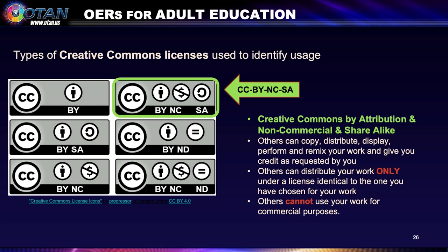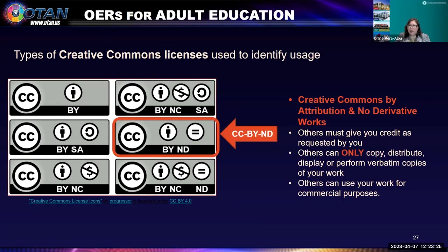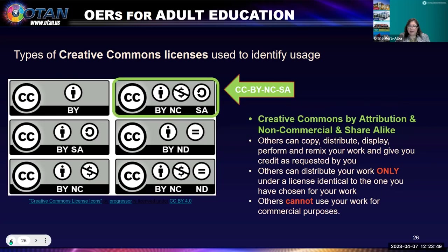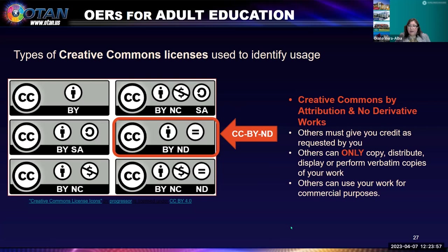The next license is CC BY ND — Creative Commons by attribution and no derivative works. Others must give you credit and can only copy, distribute, display, or perform verbatim copies of your work. Notice that the first licenses had a green indicator — they contain the five R's. These last two do not contain the five R's; they limit you from changing the work. That's the ND — no derivatives. You can use somebody else's material, but you cannot make any changes.